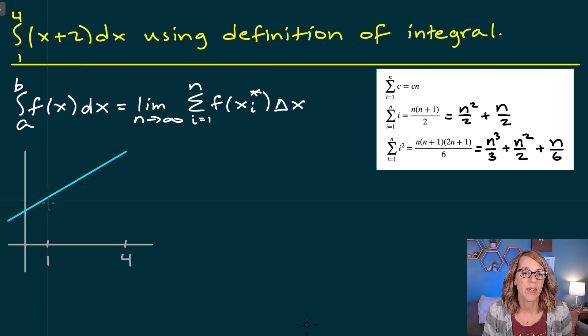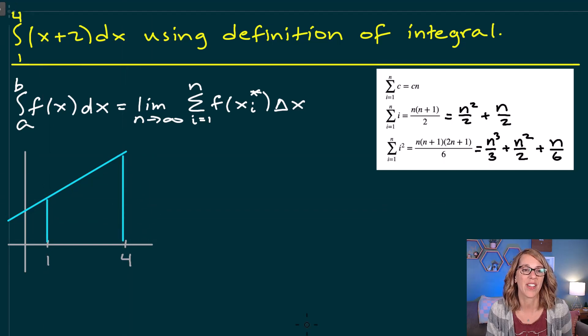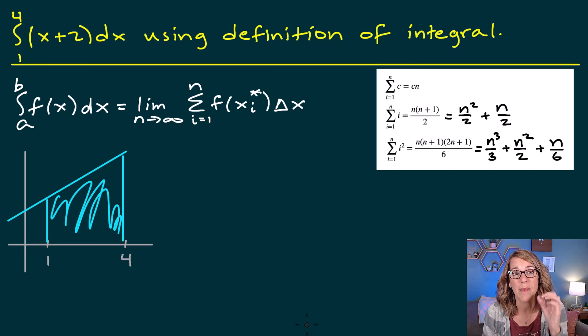So on my graph, I'm going to draw in where I want that area. I'm looking for this area right here, and it's going to be all of this space. In order to fill that space up, I'm going to need to use infinitely many rectangles.